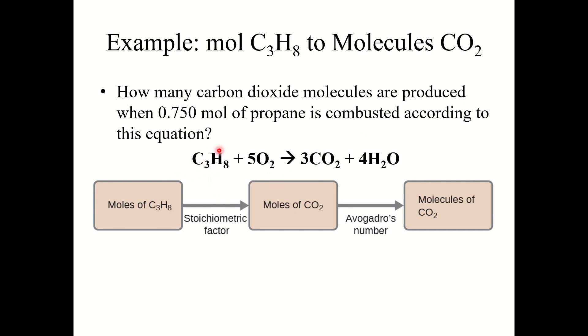First thing I should do is use stoichiometry to go from moles propane to moles carbon dioxide. Then once I have moles of carbon dioxide, now I can find molecules using Avogadro's number. So 0.750 moles C3H8. I'm going to use those coefficients from the balanced chemical equation as my stoichiometric factor. So 1 mole C3H8 goes on the bottom, 3 moles CO2 goes on top. So now moles C3H8 cancels.